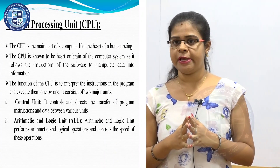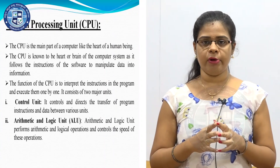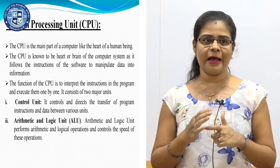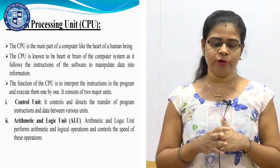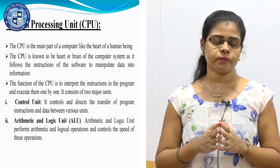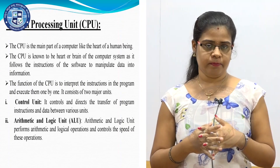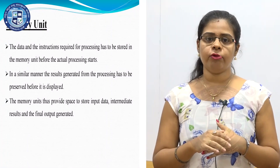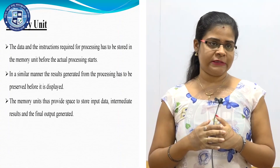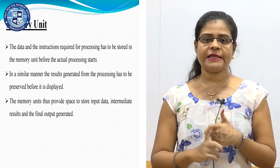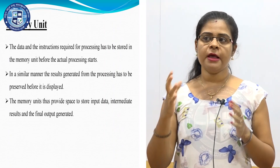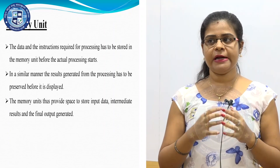The next is the central processing unit. The CPU contains subunits such as the control unit and the arithmetic and logical unit. The function of the CPU is to process the data. The next is the memory unit, which contains two subunits: primary memory and secondary memory. The function of the memory unit is to store the results of the data.